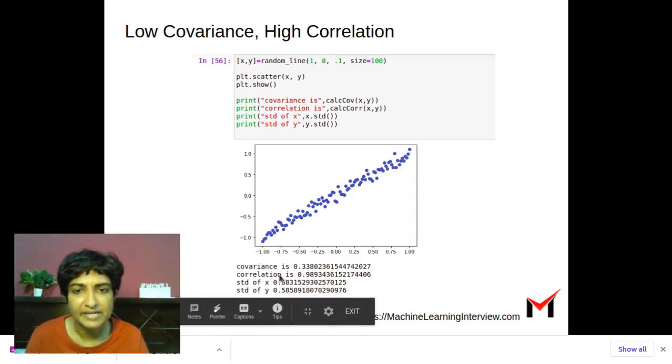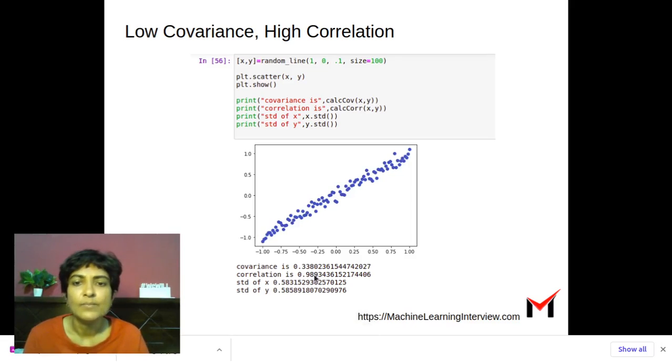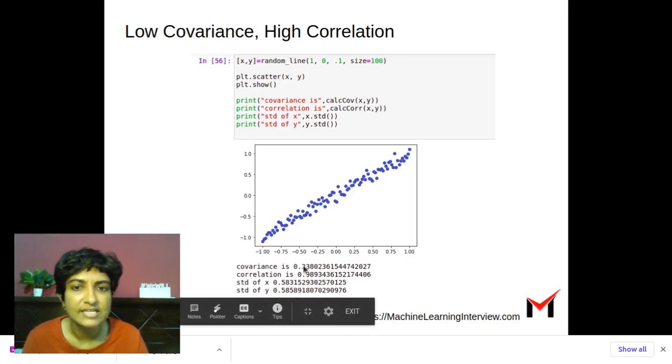And as expected, we have a high correlation of 0.989 between this x and y. But if we look at the value of the covariance, we see that it's only 0.33.